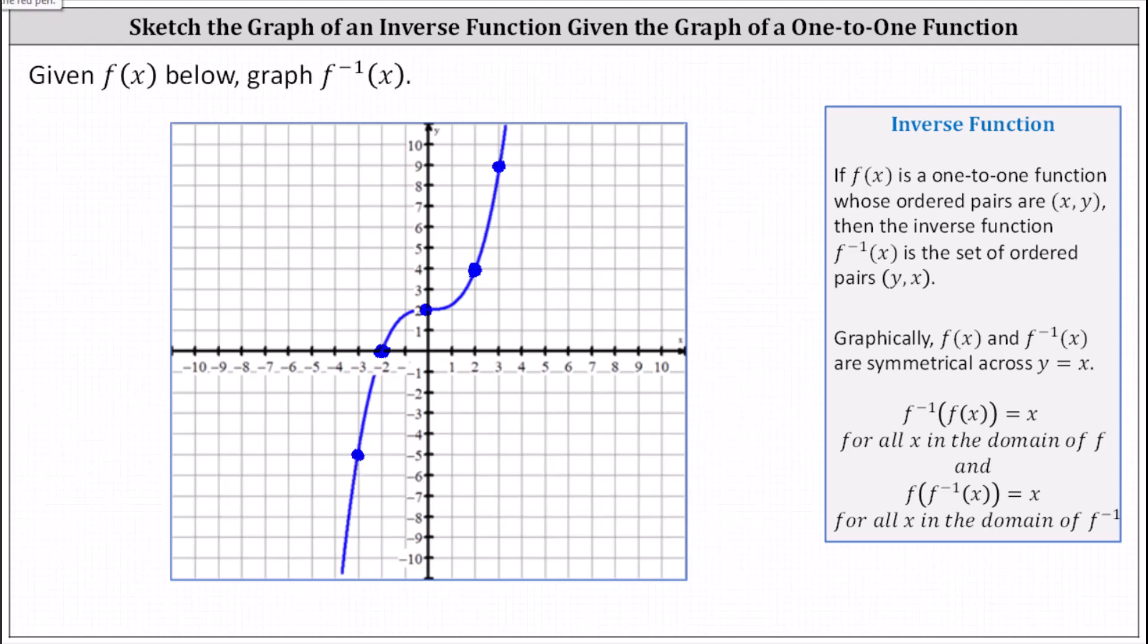Working our way from left to right, the ordered pair for this point is (-3, -5), and then we have (-2, 0), we have (0, 2), (2, 4), and let's say (3, 9).